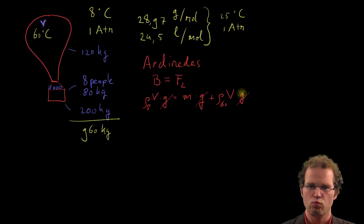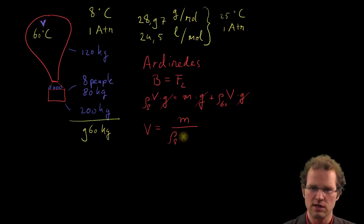So this volume, we can calculate it now easily, because we can rewrite this as V is equal to, we have to take this one to the left, so ρ₈, it's M divided by density from 8 minus density from 60.